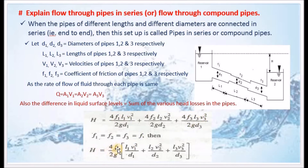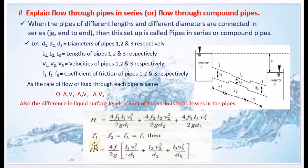The overall head loss h is equal to 4f divided by 2g, multiplied by the sum: L1V1² divided by D1, plus L2V2² divided by D2, plus L3V3² divided by D3. This is the total head, representing the pressure difference between the two surface levels.